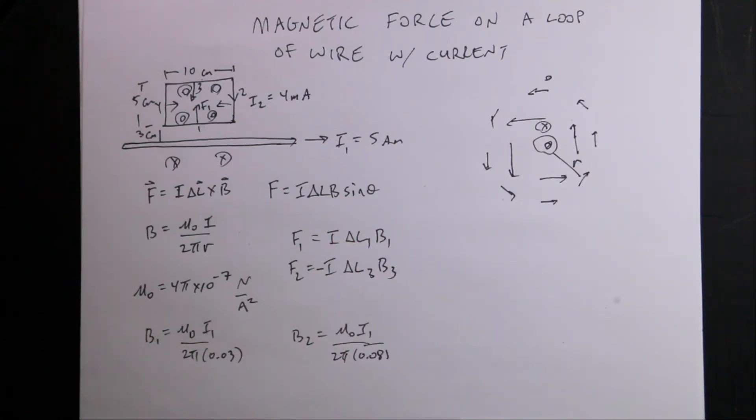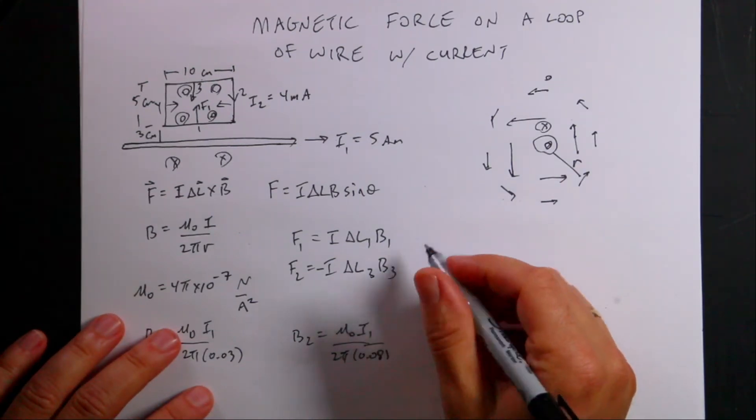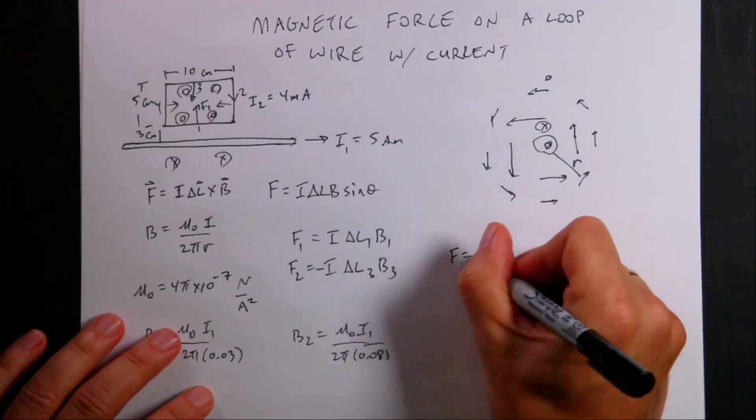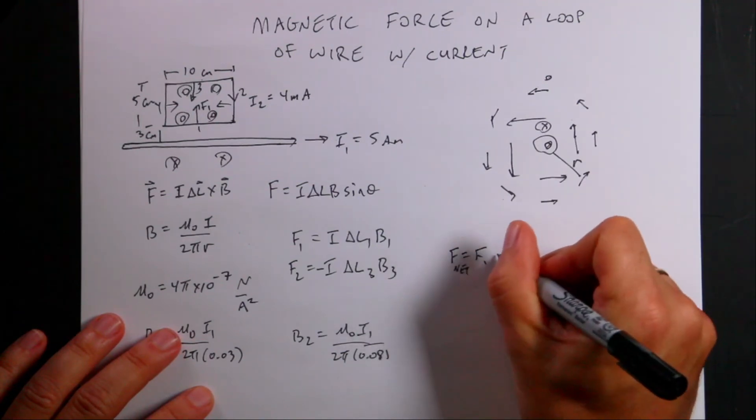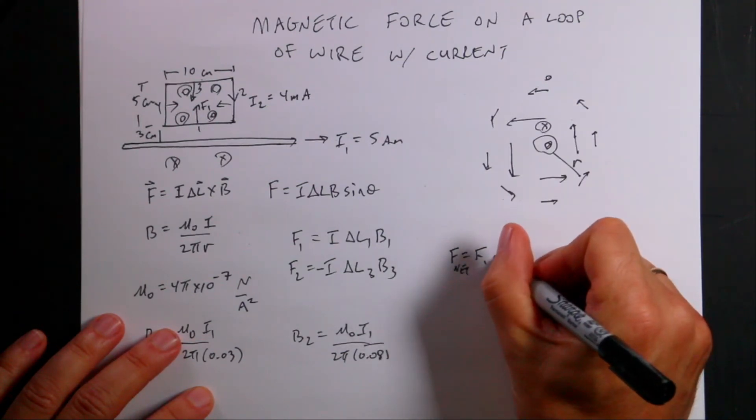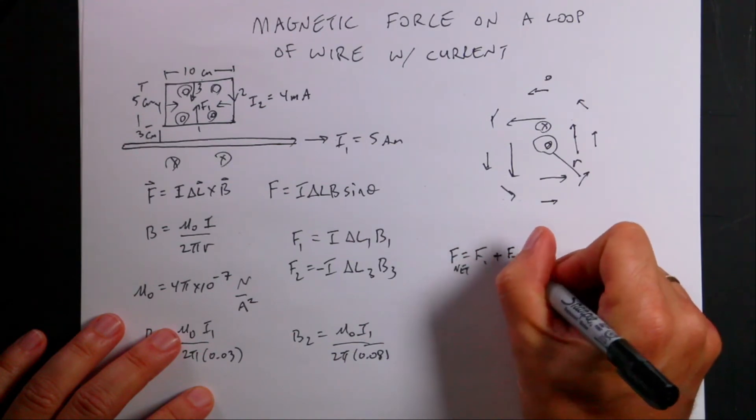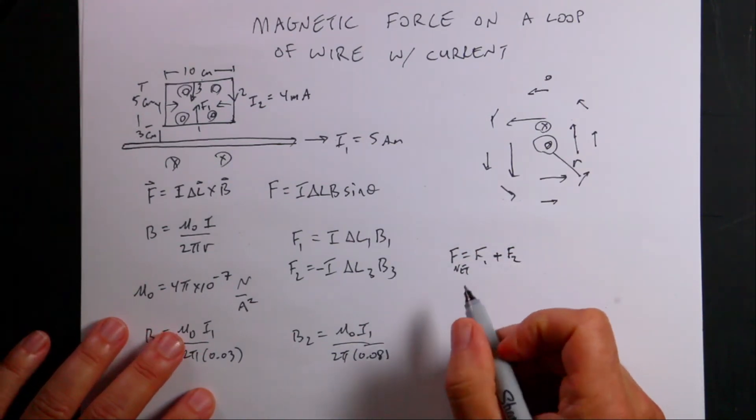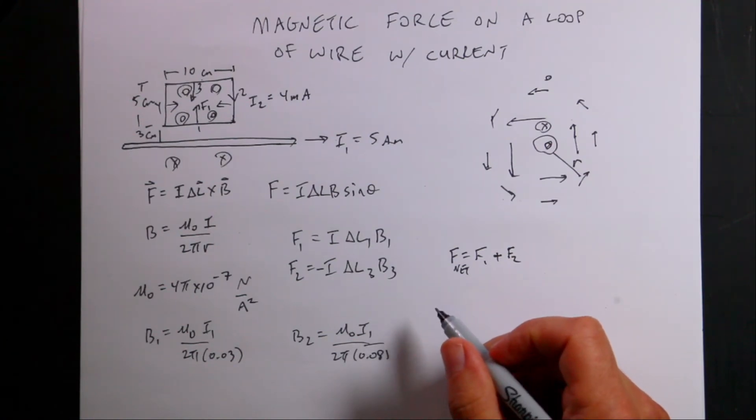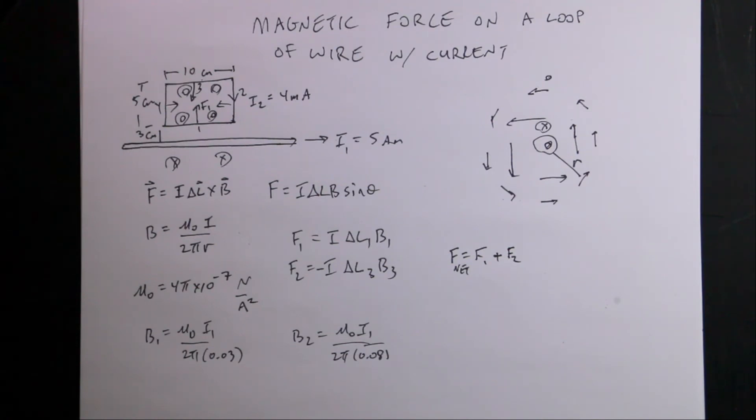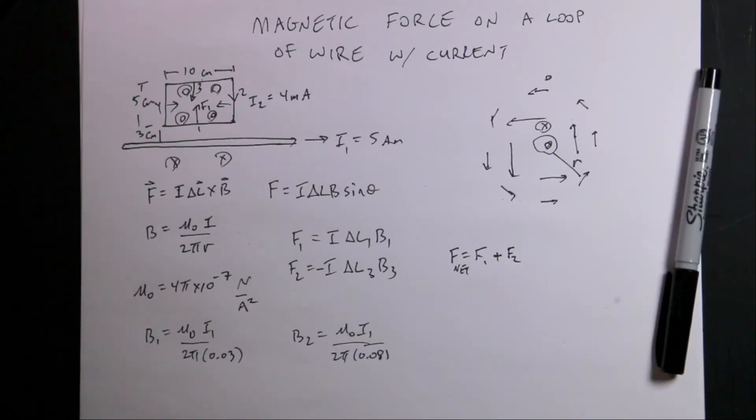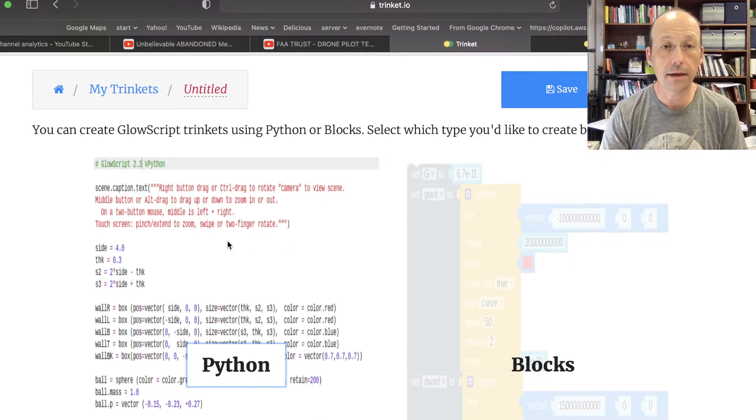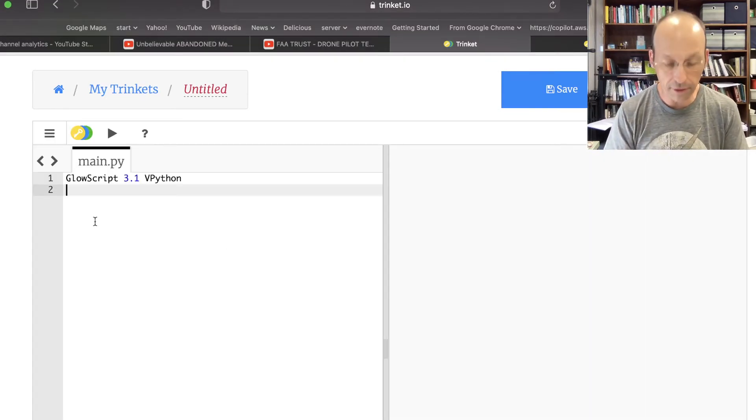So now we can put it all together. F net equals F1 plus F2 but F2 is negative. Let's do this in Python. Don't you think that would be better in Python? I could do all this calculation without that, but I'd rather not. So let's just switch over to Python. It makes a really great calculator in this particular case.